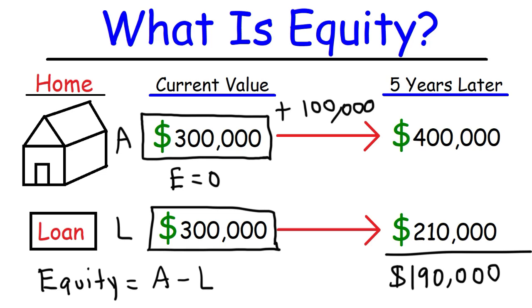So what does that even mean? Well, it means that if you liquidate your asset — if you sell your home for $400,000 and pay off all of your mortgage for $210,000 — this is how much cash you're going to have at the end of those transactions. Equity tells you how much value you have in your home after paying off all of your liabilities. That's the basic concept. Hopefully this video helped you understand the concept of equity as it relates to your home.